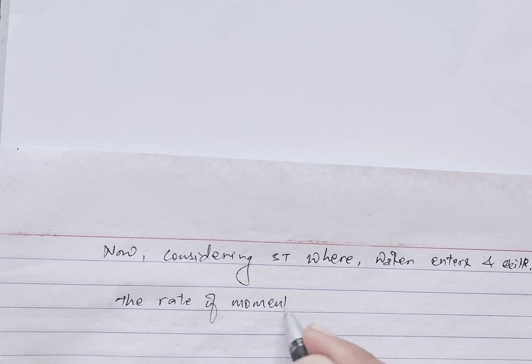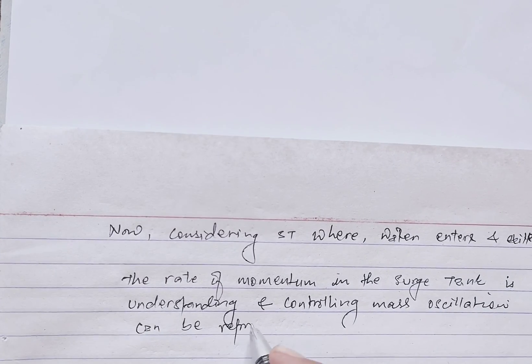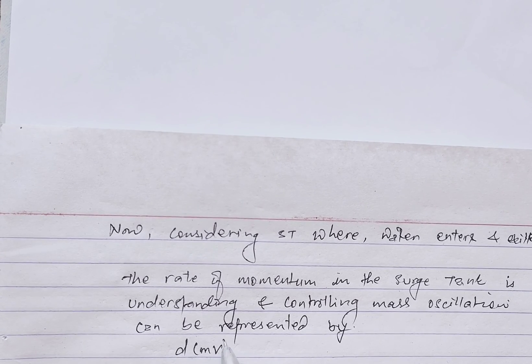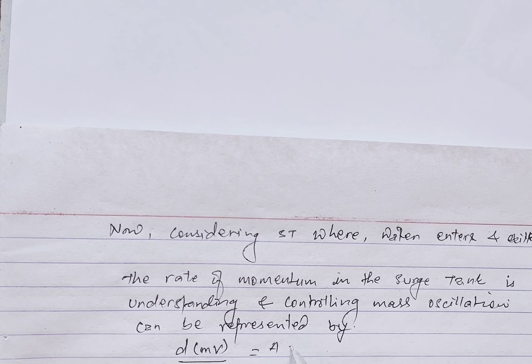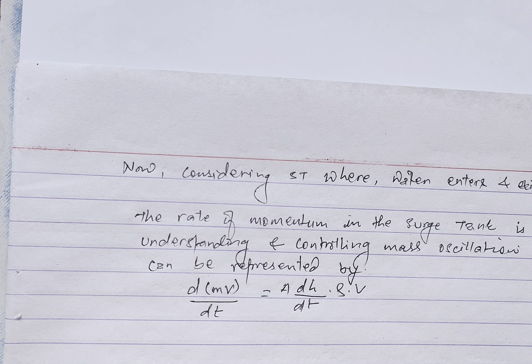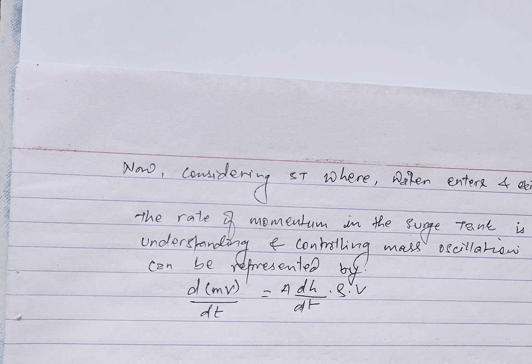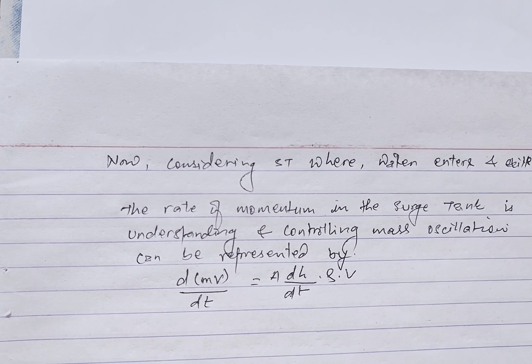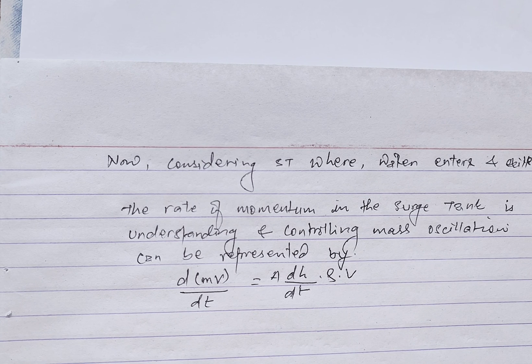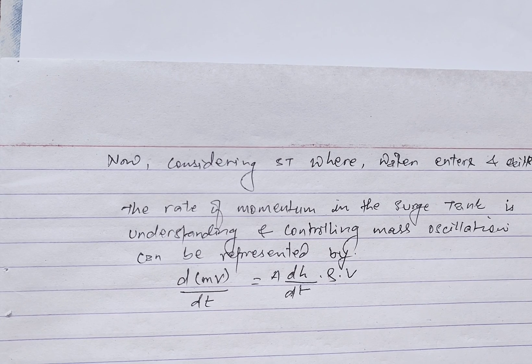Consider a source tank where water enters and exits. The rate of change of momentum in the source tank is critical in understanding and controlling mass oscillation: dm·v/dt = A · (dh/dt) · ρv, where m is the mass of fluid in the tank, v is the velocity of water, A is the cross-sectional area, and dh/dt is the rate of change in water height. To control mass oscillation, the focus is on designing the source tank to minimize rapid changes in water height (dh/dt), achievable through appropriate source tank volume, damping mechanisms, and control systems.